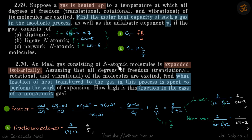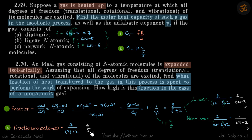Since the molecule type is not specified, we give both answers. For linear molecules, f = (6n - 5), and for non-linear, f = (6n - 6), giving the respective fractions. For a monatomic gas, degrees of freedom are three, so the fraction is 2/5.